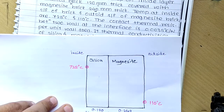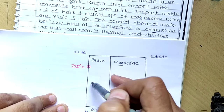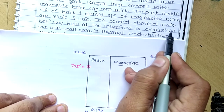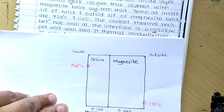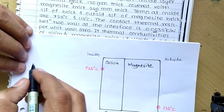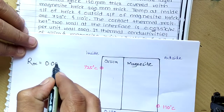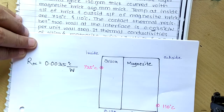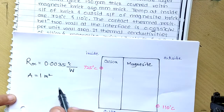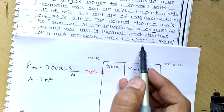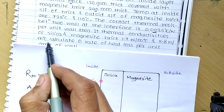Next, we have the contact resistance between the two walls at the interface. The thermal contact resistance is given directly as R_tc = 0.0035 °C/W per unit wall area. Since silica and magnesite are in contact, and the contact is not perfect, it generates some resistance — and that resistance value is given. The thermal conductivities of silica and magnesite are 1.7 W/m·°C and 5.8 W/m·°C respectively.